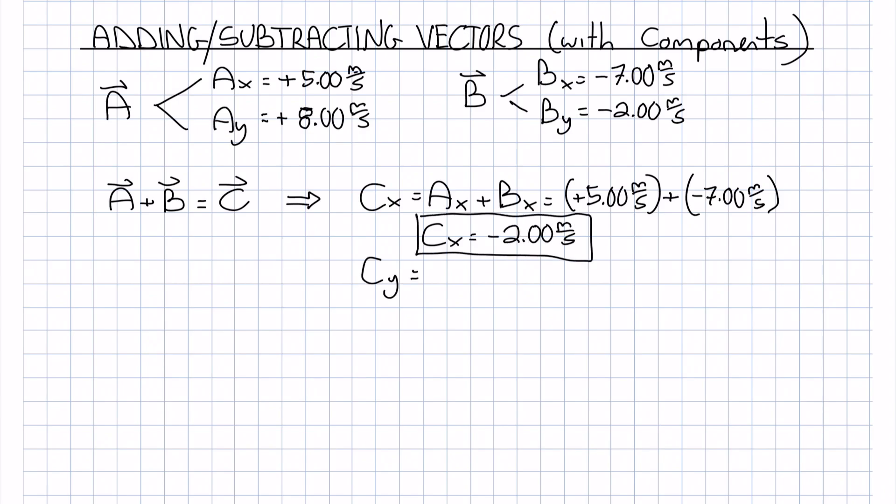We can do the same thing with Cy now by adding Ay plus By, and we'll get plus 6.00 meters per second.